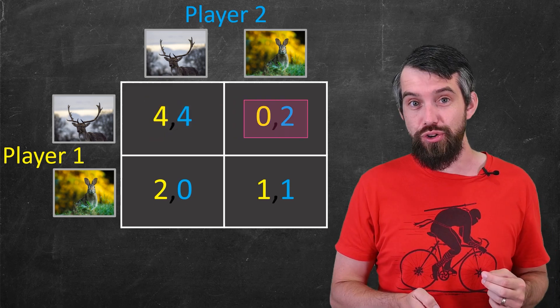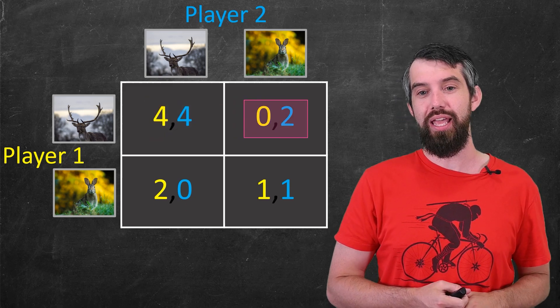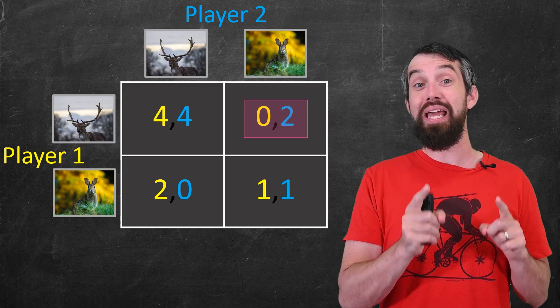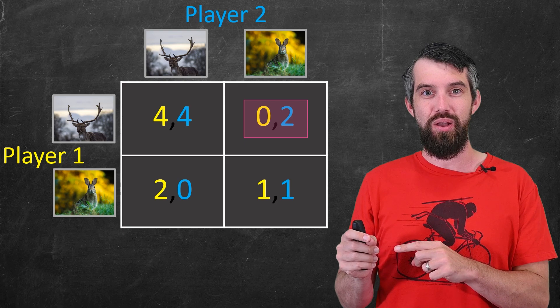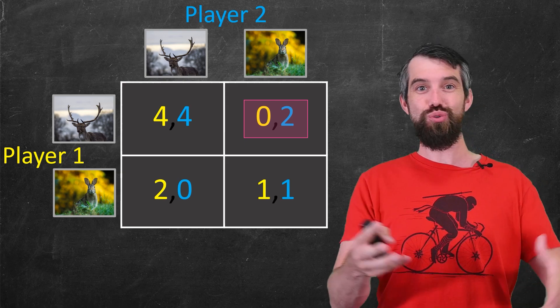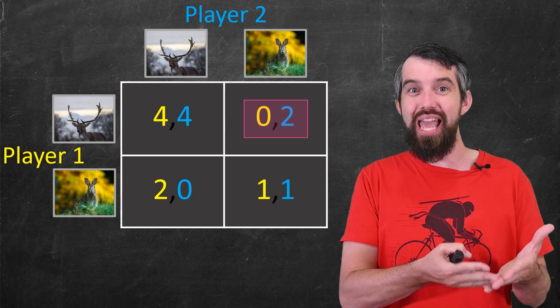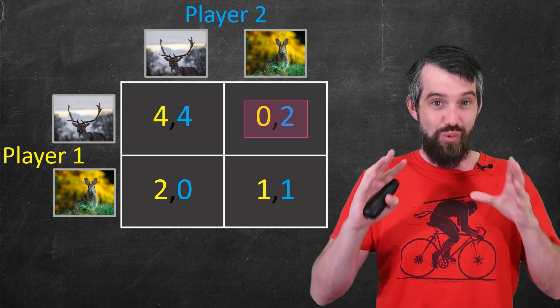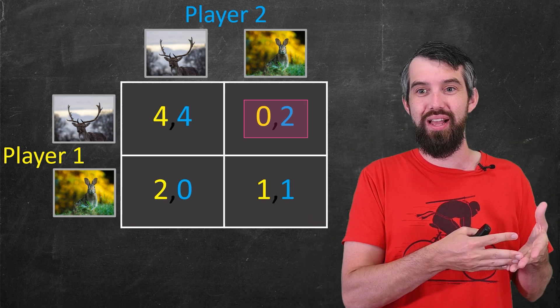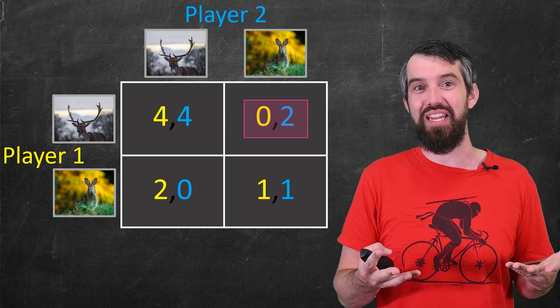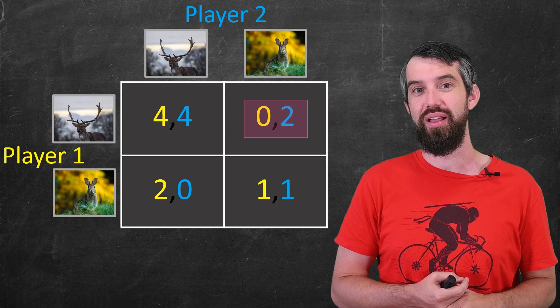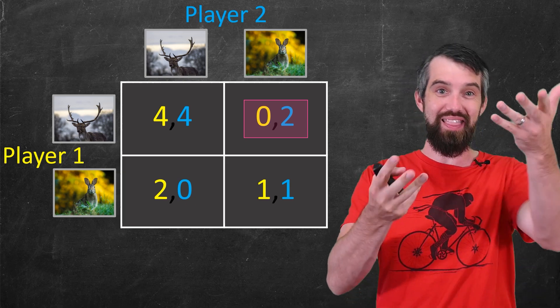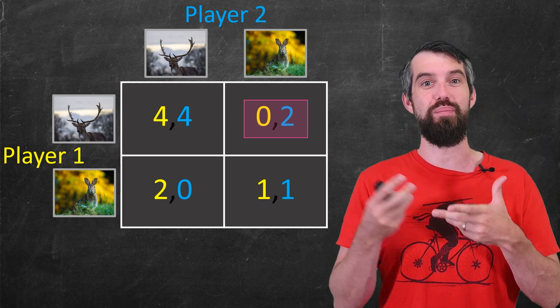This is in contrast to what would happen, for example, if the first player plays stag and the second player plays hare. Well, this is a disaster for player 1. They've tried to go after the stag, but the stag requires cooperation, requires both players to be able to get it. So they get 0. They get nothing if they try to go after the stag while the other player is going after the hare. But the player who goes after the hare, they get the hare, they get the two units from the hare.